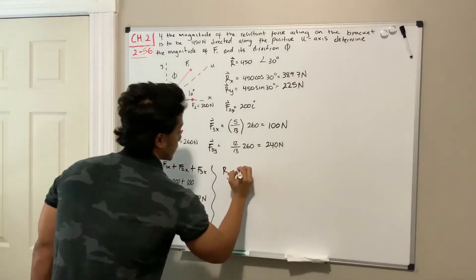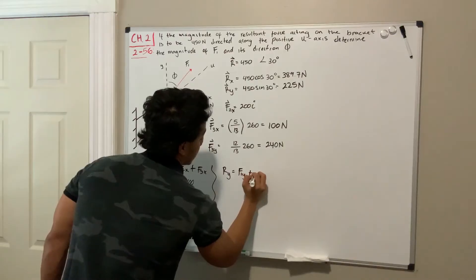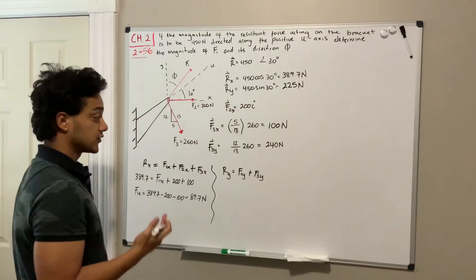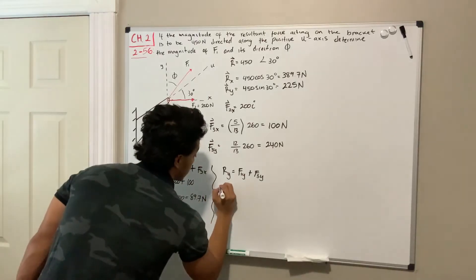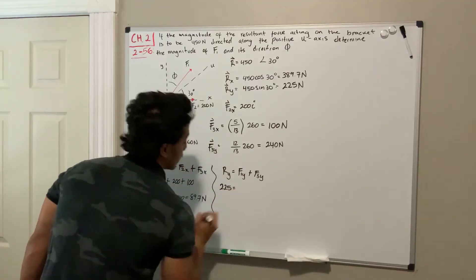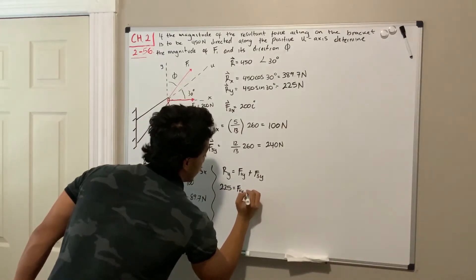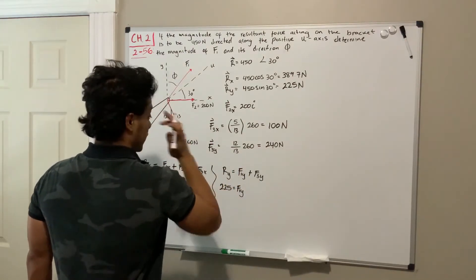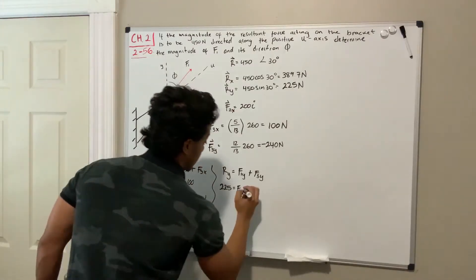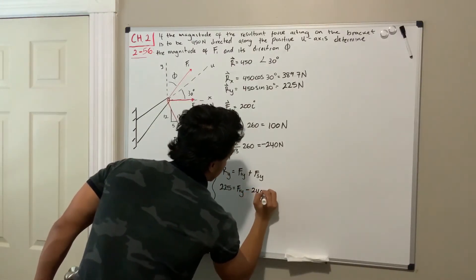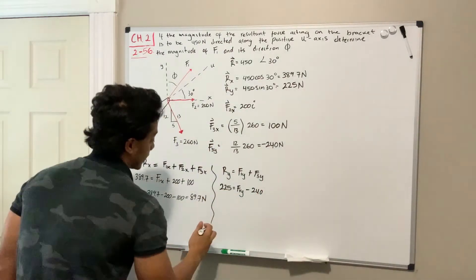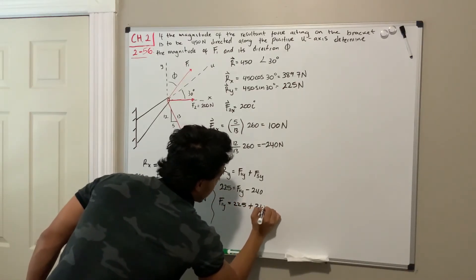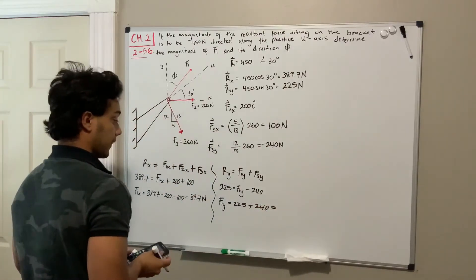Now let's do the same for the y-direction. The resultant in the y-direction equals F1y plus F3y. Why not F2? Because F2 doesn't have anything in the y-direction. So: 225 equals F1y, and F3y is negative, so minus 240 newtons. Solving for F1y: it's going to be 225 plus 240, which gives us 465 newtons.